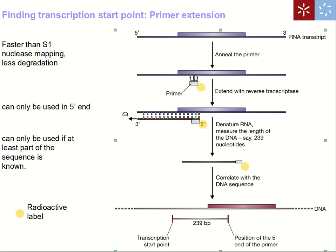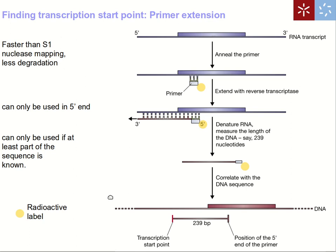We use reverse transcriptase to make a DNA copy of the RNA molecule all the way to the end, producing a DNA copy corresponding to the beginning of transcription. We then analyze this molecule, and the size between the primer location and the transcription start will tell us exactly where transcription begins. Of course, the limitation is that we need to know some sequence in order to design this primer.